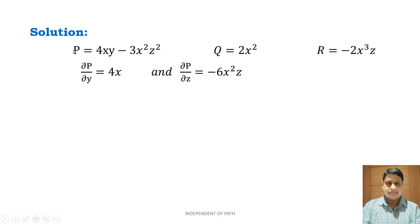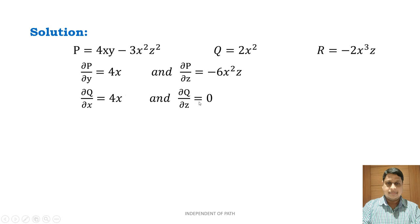Partially differentiate P with respect to y and z: ∂P/∂y = 4x (since 4x is constant and y gives 1, and there is no y in the second term), and ∂P/∂z = −6x²z (since −3x² × 2z = −6x²z). Partially differentiate Q with respect to x and z: ∂Q/∂x = 4x (since 2 × 2x = 4x), and ∂Q/∂z = 0 since there is no z term.